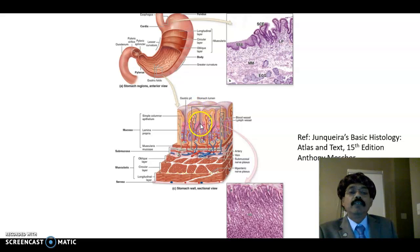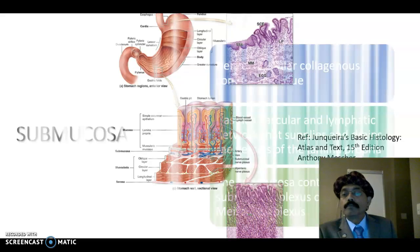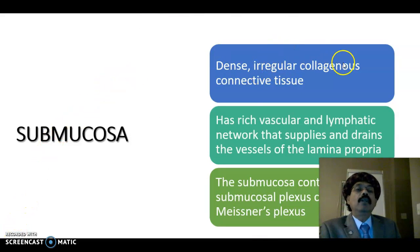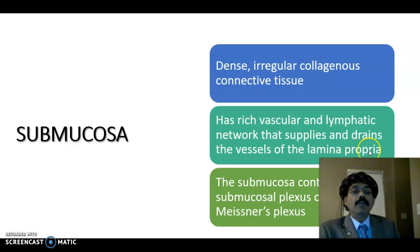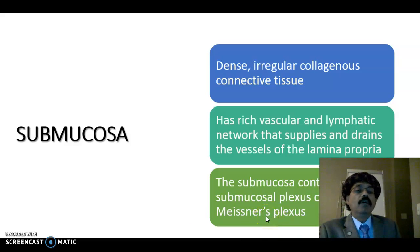These are the gastric pits here. These are the gastric glands. The submucosa is dense irregular collagenous connective tissue and has a rich vascular and lymphatic network that supplies and drains the vessels of the lamina propria. The submucosa contains the submucosal plexus called Meissner's plexus. These are parasympathetic in function and are part of the enteric nervous system, essential for peristaltic movement of the intestine and stomach. Meissner's plexus is derived embryologically from neural crest cells.